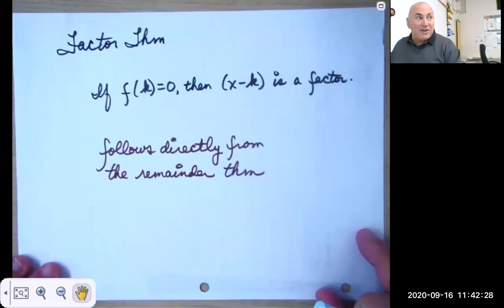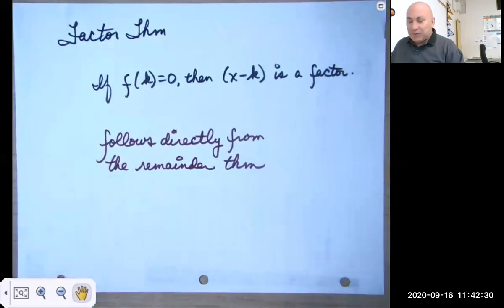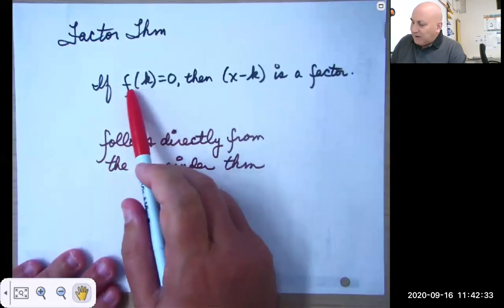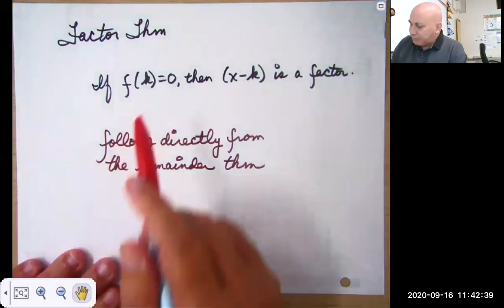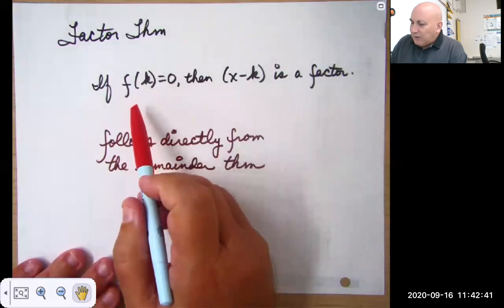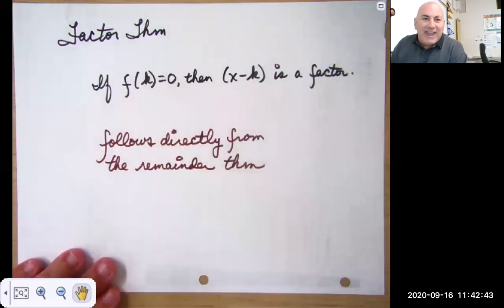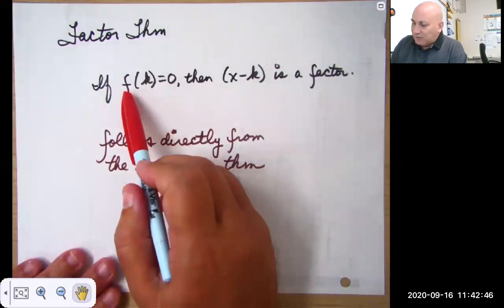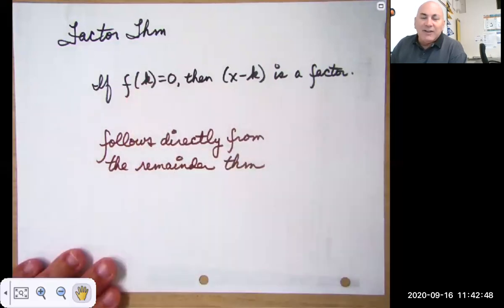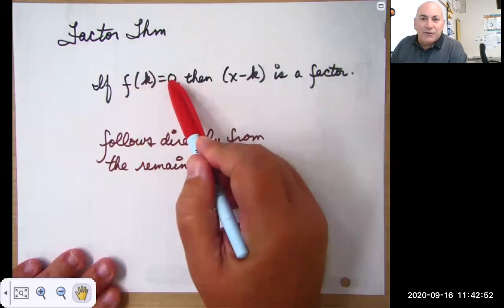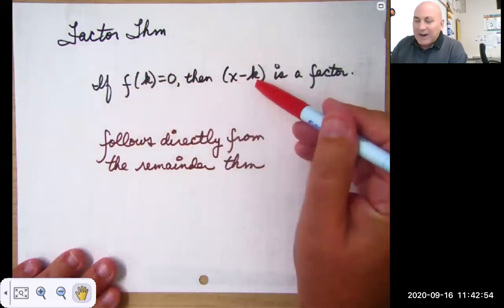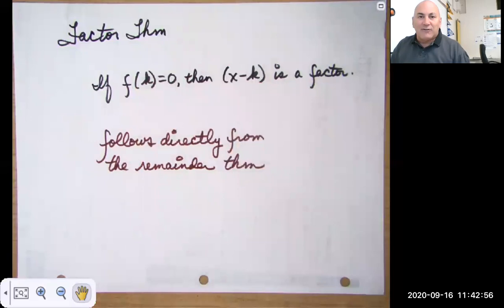Then there's the factor theorem, which I mentioned not by name previously. If k is an x-intercept, then f of k equals 0. That means x minus k is a factor of that polynomial.